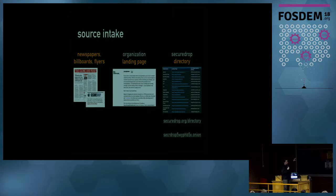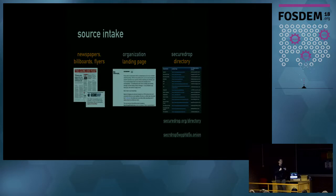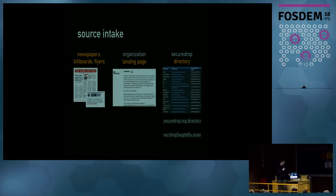All of these physical methods direct people to what we call the landing page — the page on the news organization's website that describes what SecureDrop is, any operational security concerns the source should be aware of, and how to get to SecureDrop. Freedom of the Press Foundation also has a directory of a subset of SecureDrop instances, with landing pages, which orgs are running them, and the Onion address, so sources can cross-check whether an instance is valid.